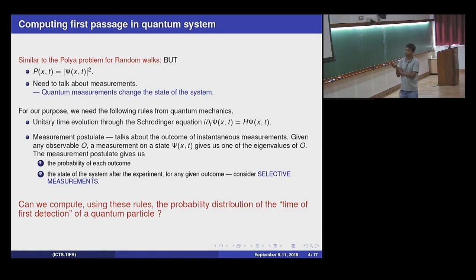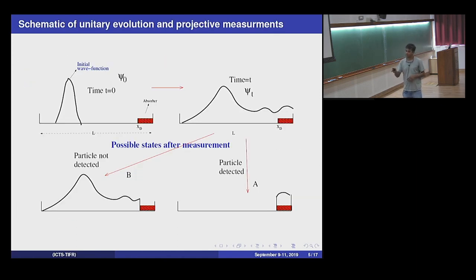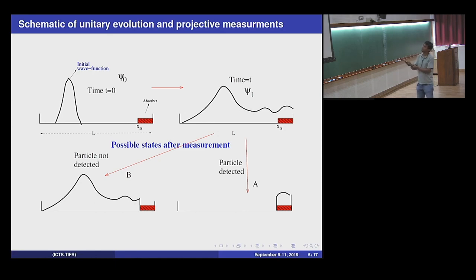The measurement postulate tells us the probability of each outcome when we make a measurement, and also tells us what the state of the system is after the measurement. So using these rules, can we answer this particular question? Let me explain exactly what this means: unitary evolution followed by projective measurements. This is the initial state, and it evolves for some time tau via unitary evolution.